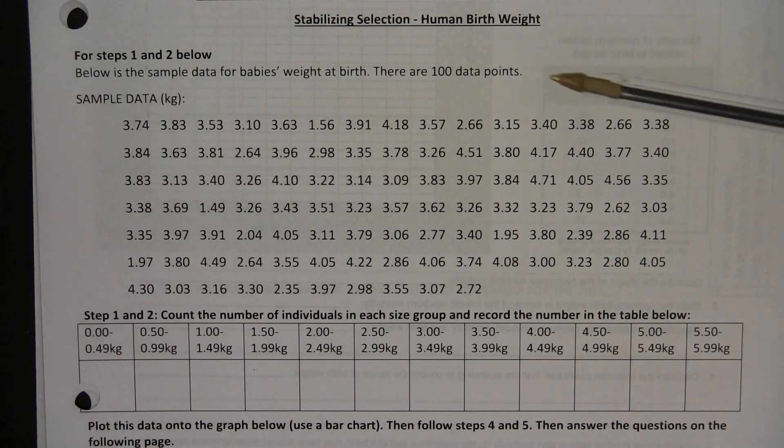We can see we've got sample data for babies weight at birth, and there are 100 data points. These weights of different babies are in kilograms. What you need to do first for this homework is record the number of individuals in each size group and count the number of individuals in each size group and record the number in this table here.